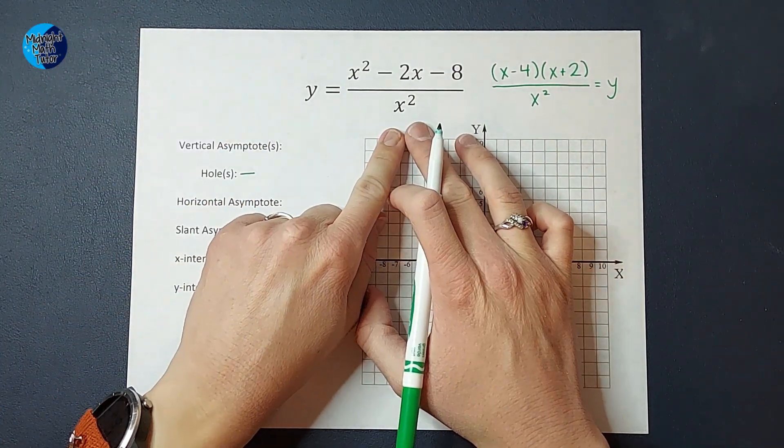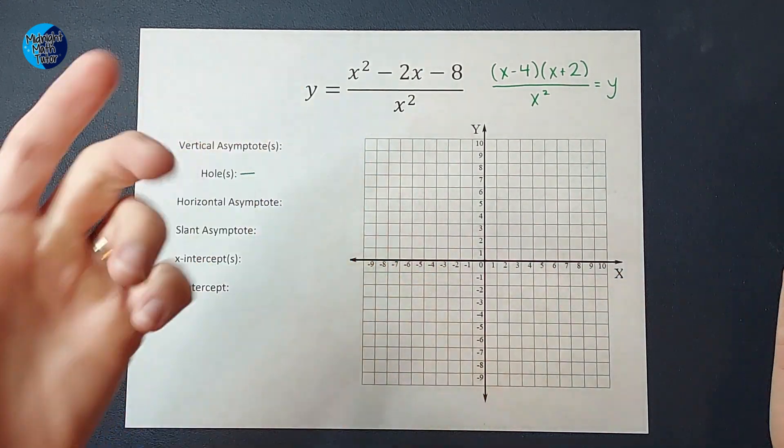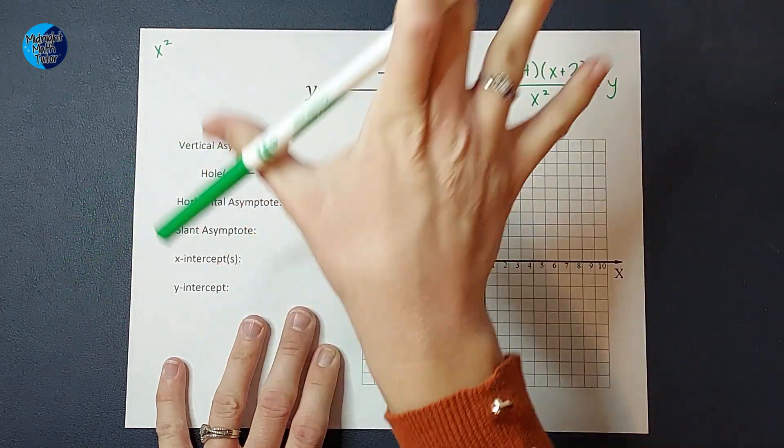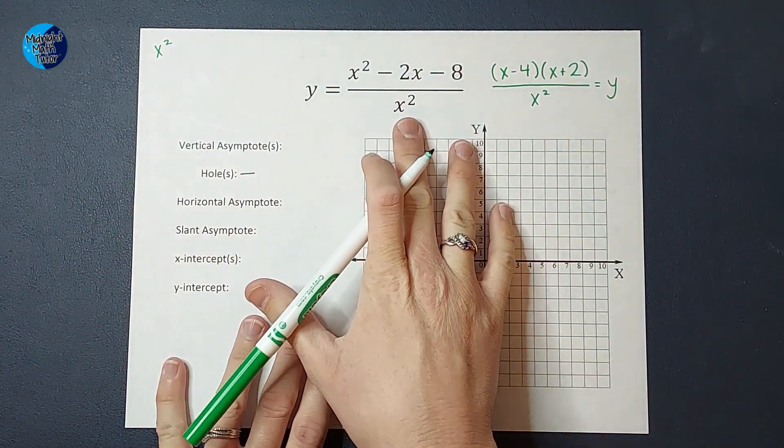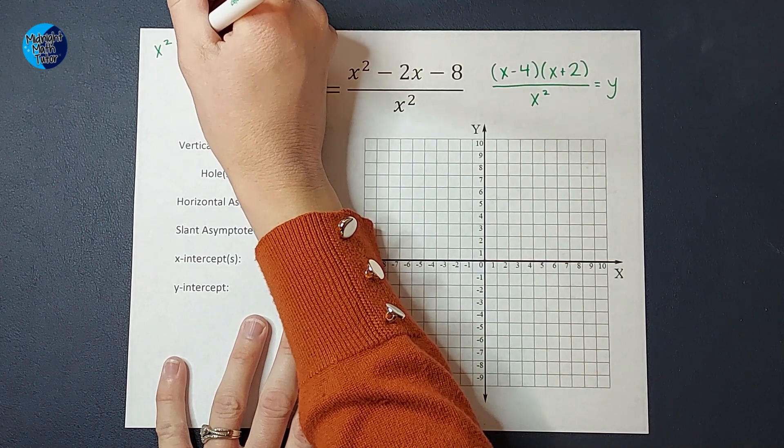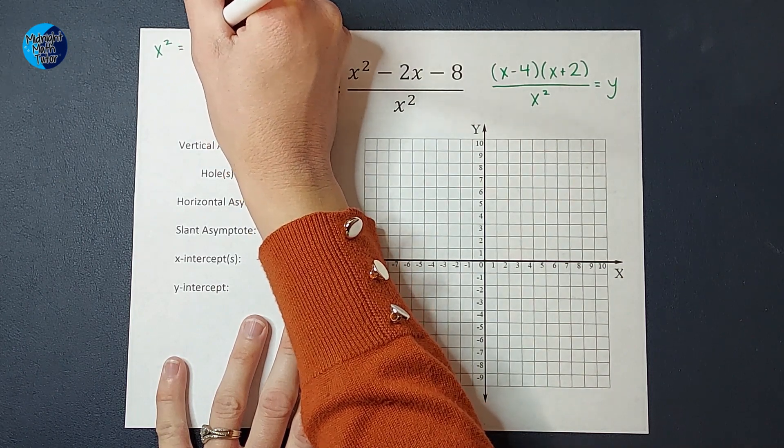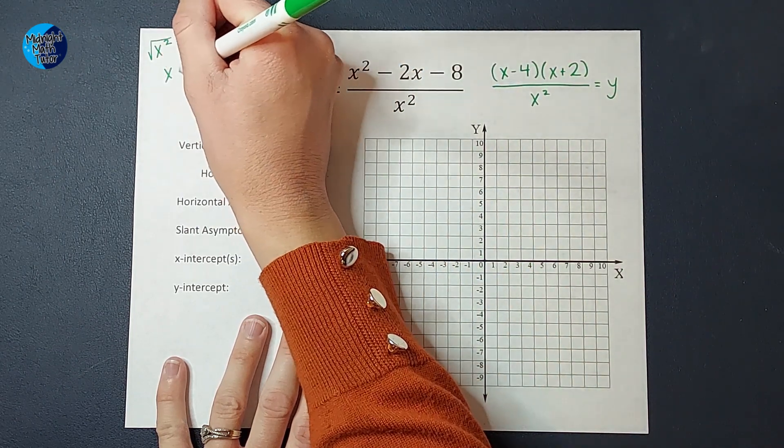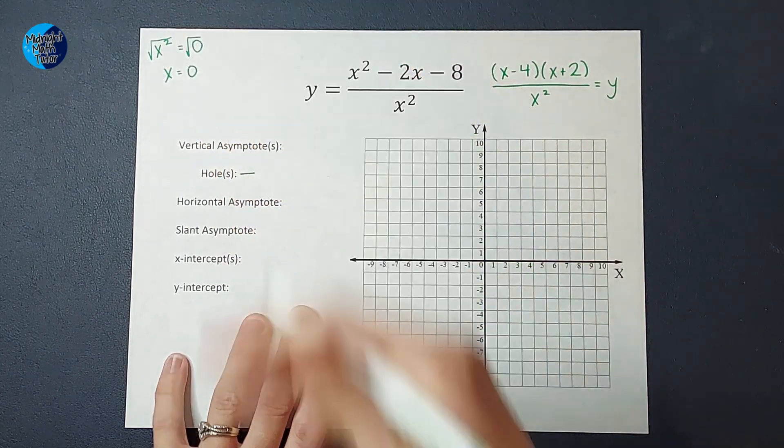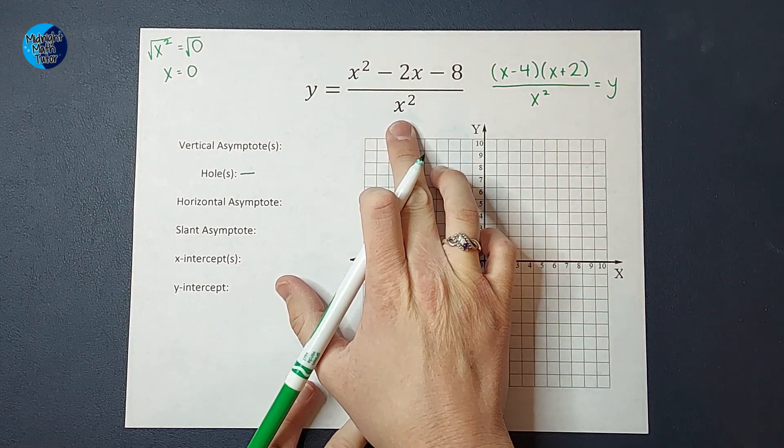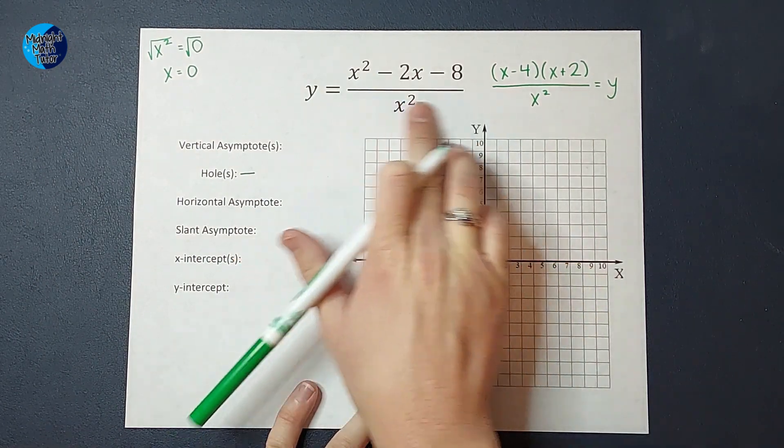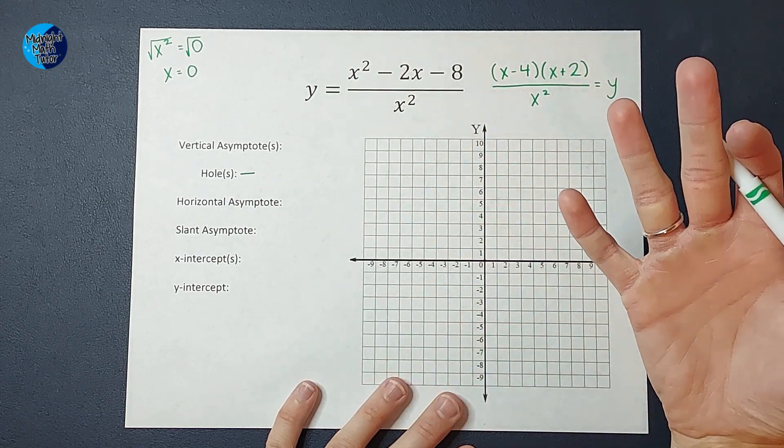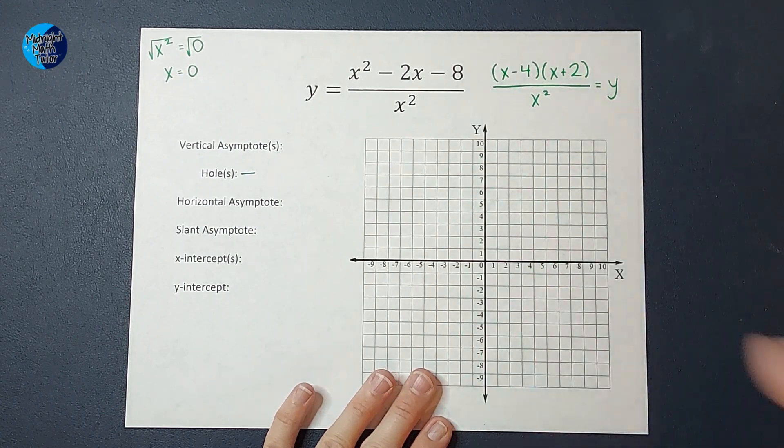So in this case, this one's a little different because my denominator is x squared. So if I set x squared equal to zero, that's what you do to find your vertical asymptotes, is you set the denominator equal to zero. So if I set x squared equal to zero, I mean it's a zero, so you can do that if you want. We end up with x equals zero, right? So that means if I plug in zero for x, my denominator is going to be zero, which is undefined. So we're going to have an asymptote at zero.